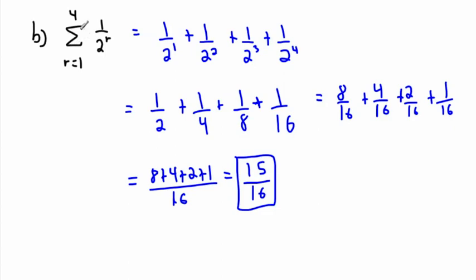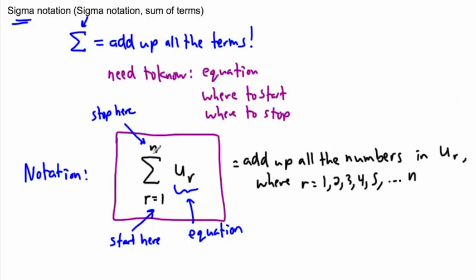So again, although this notation may look really weird, I hope you see it's pretty straightforward. You just have a rule and it's going to have some R's in it because that tells you then basically, start off making R equal one and then increase it, keep going until you reach this top value. So really that's why this just means add up all the, here's your rule, start here, finish here.